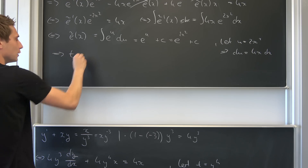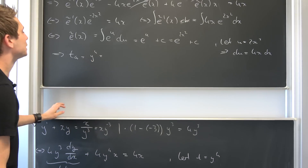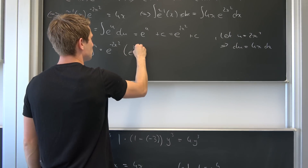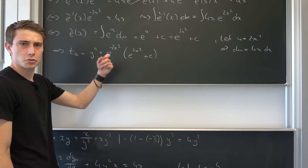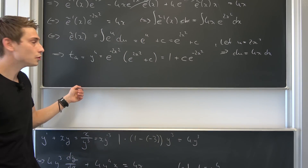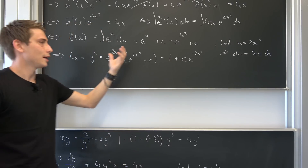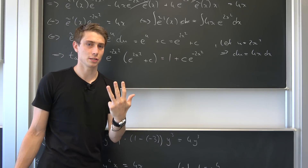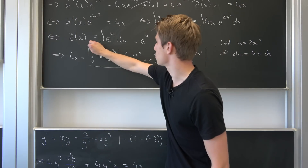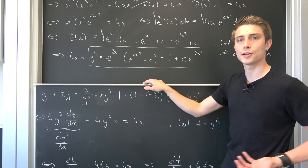The general solution for t is: t general — don't forget we let t equal y to the fourth power — equals e to the negative 2x squared times e-schlange. And e-schlange is e to the 2x squared plus c, so this evaluates to 1 plus c times e to the negative 2x squared. So y to the fourth power equals 1 plus c times e to the negative 2x squared. You can take square roots to get y, ending up with four solutions (two of which are imaginary), or interpret it directly. For all constants c, this solves the original differential equation.